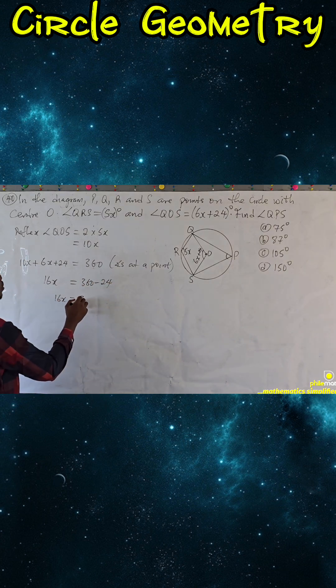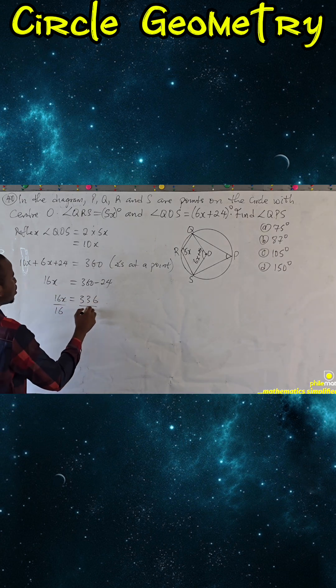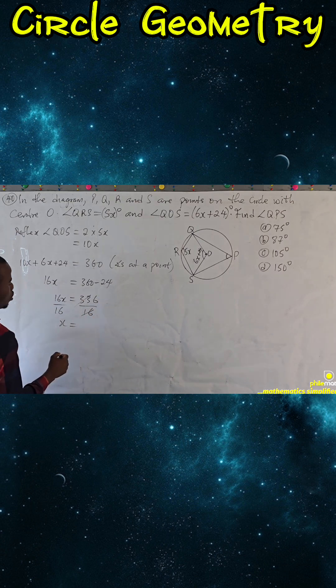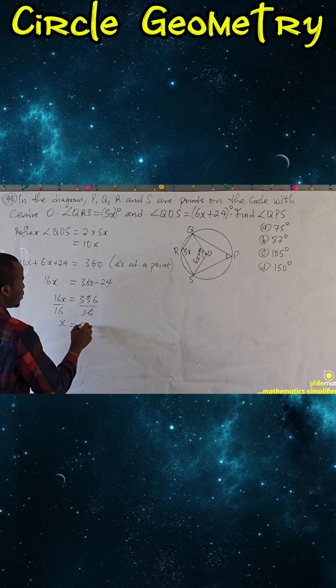16x will be 336. Divide both sides by 16. X will be 16 into 33 is two times, remember one into 16 is one. So x is 21.